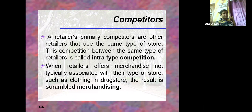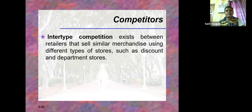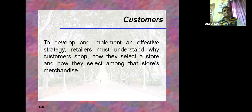When retailers offer merchandise or products not typically associated with their type of store - such as clothing in drug stores - the result is scrambled merchandising. What a retail store is meant for and what particular product they are selling: if there is a mismatch, that is scrambled merchandising. Inter-type competition is present between retailers that sell similar products using different types of stores. For example, an XYZ brand available in a discount store may also be available in a department store.